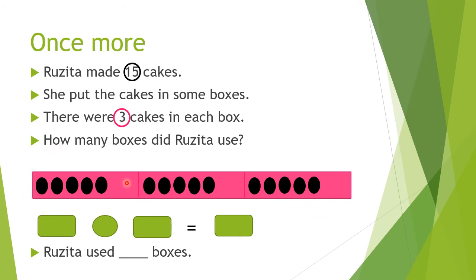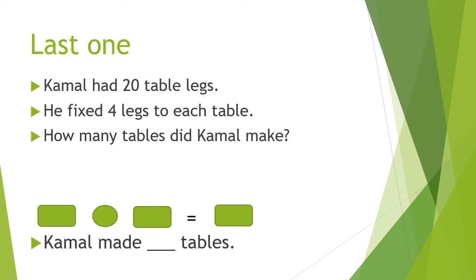Now we choose one box and count how many dots: 1, 2, 3, 4, 5. There are 5 dots. So the answer is 5. Now we write the division sentence. Which one is the bigger number, 15 or 3? 15, and then divide, and then the smaller number 3, and then the answer 5.